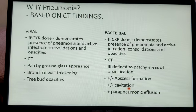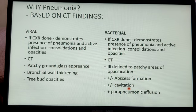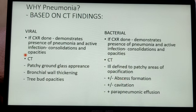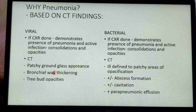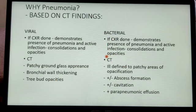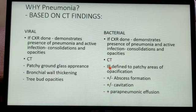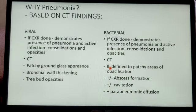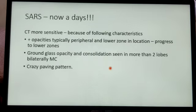These are the CT findings which can define the difference between viral and bacterial. Viral CT mainly shows patchy ground glass appearance, bronchial wall thickening — both seen in our case — and tree-bud opacities. In bacterial pneumonia CT scans, there are ill-defined to patchy areas of opacification, presence or absence of abscess formation or cavitation, and presence of parapneumonic effusion.